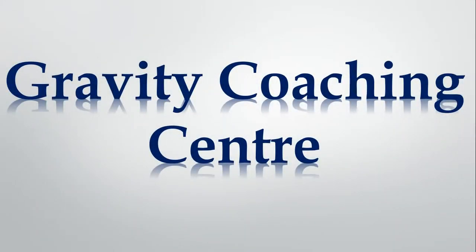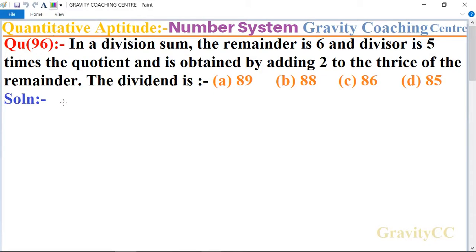Welcome to our channel Gravity Coaching Center, Quantitative Aptitude, chapter Number System, question number 96. In a division sum, the remainder is 6 and divisor is 5 times the quotient and is obtained by adding 2 to the thrice of the remainder. The dividend is?